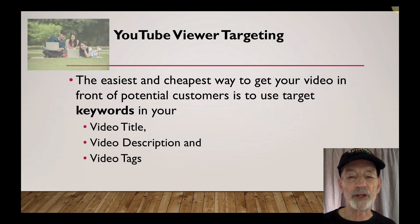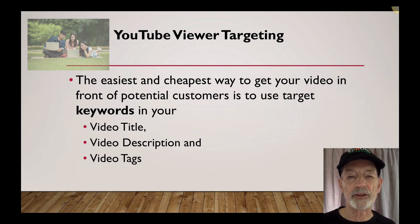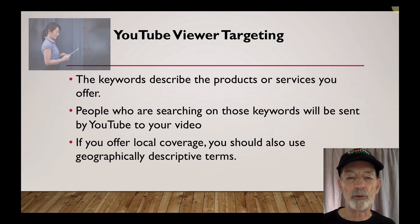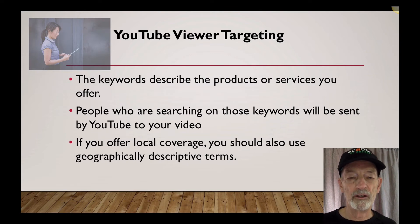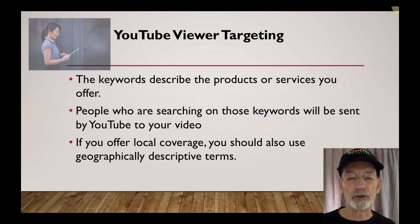The easiest and cheapest way to get your video in front of potential customers is to use target keywords in your video title, description, and tags. The keywords describe the products or services you offer. People who are searching on those keywords will be sent by YouTube to your video. If you offer local coverage, you should also use geographically descriptive terms.